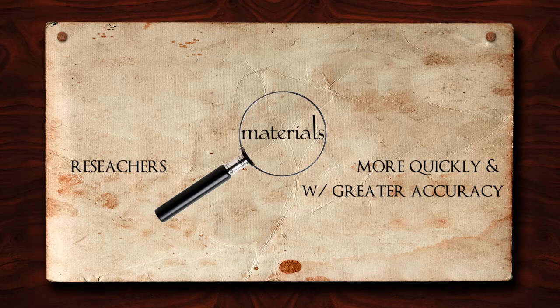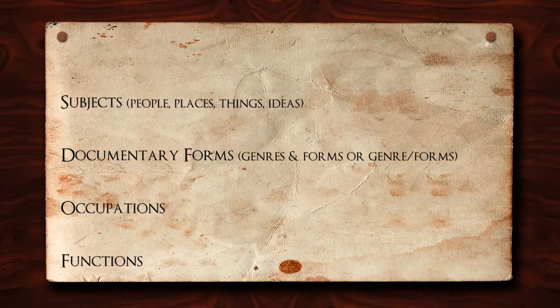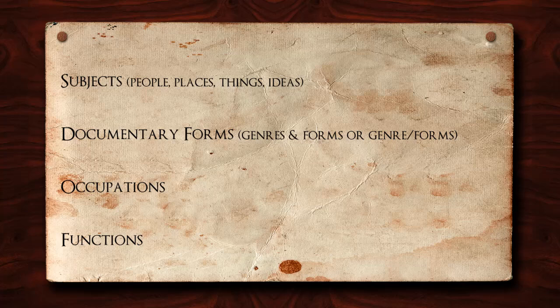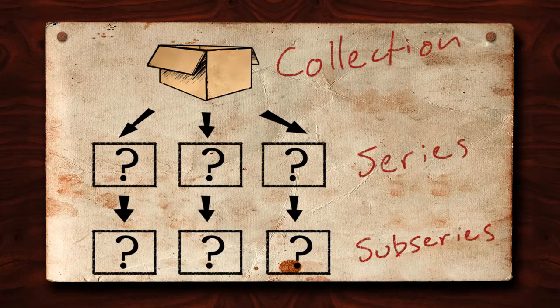While Describing Archives, a content standard or DACS, lists six categories of access points, there are basically only four: subjects, which can include people, places, things, or ideas; documentary forms, what we typically call genres and forms; and occupations and functions. Our institutional requirements state that each of these types of access points should be used as needed at the collection, series, and subseries levels. It should be remembered that these values will inherit if not re-entered at the appropriate level.